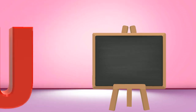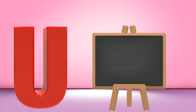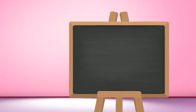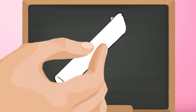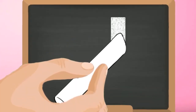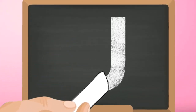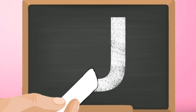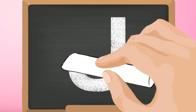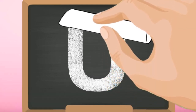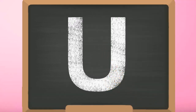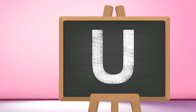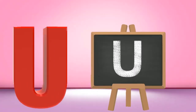U, capital U. Start from the top and draw a standing line down. Then curve towards the right and keep going up to reach the top. Capital U.